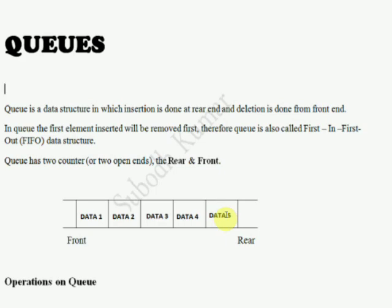The new person joining a queue goes to the end, and whoever is at the front is served first. This is the basic analogy for how the Queue data structure works — first in, first out.